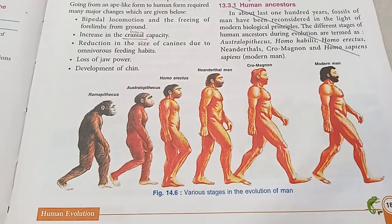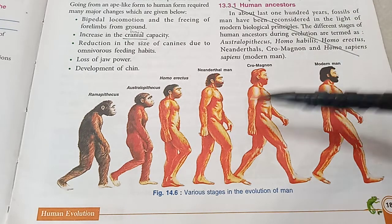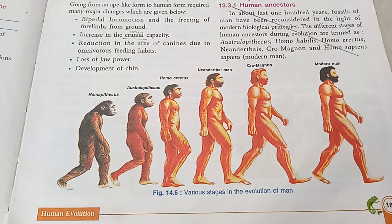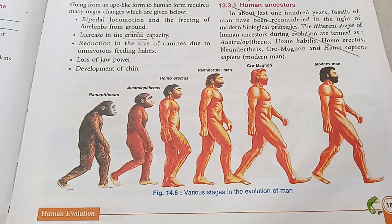Now let's understand speciation. If you look at the various stages of evolution of man, we see that over millions of years tiny changes happened gradually which led to huge changes over a long period of time. Each of them represents a different species. Two species are different because they cannot easily reproduce with each other. An Australopithecus cannot reproduce with a Cro-Magnon man — that is why they belong to different species. A new species is not created instantly; it happens gradually.